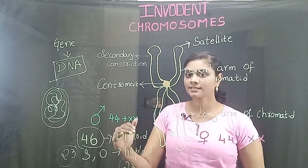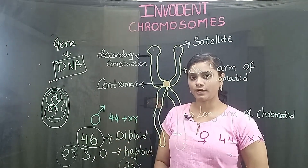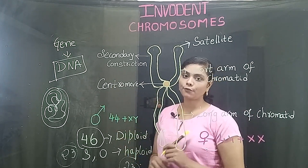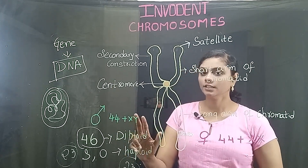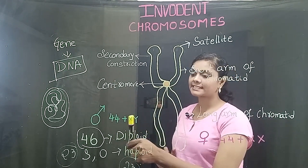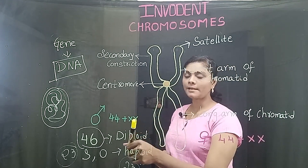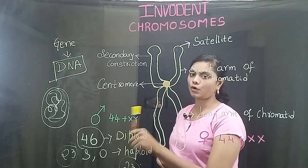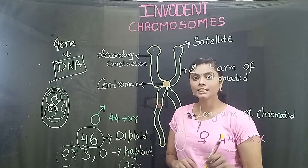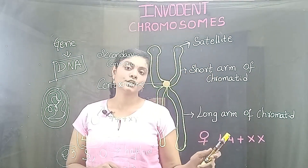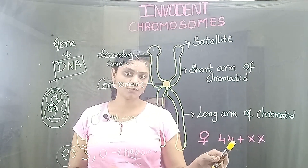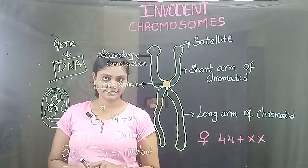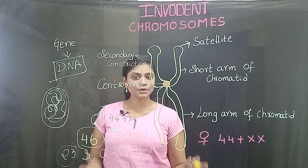So 46 is diploid and 23 is haploid. In the male individual, there are 44 autosomes with sex chromosomes X and Y — that is, one pair of sex chromosomes and 22 pairs of autosomes. In the female, it is 22 pairs of autosomes and one pair of sex chromosomes, X and X.